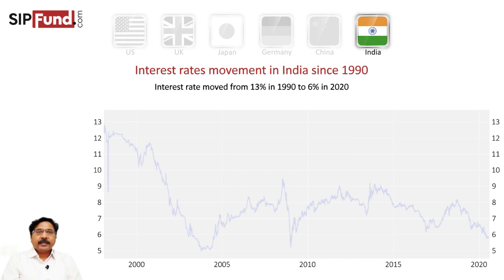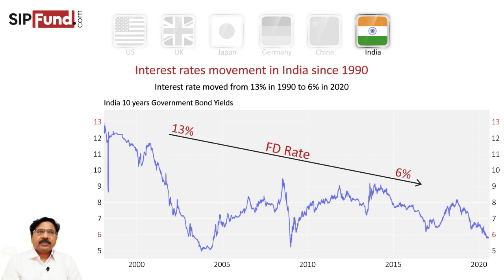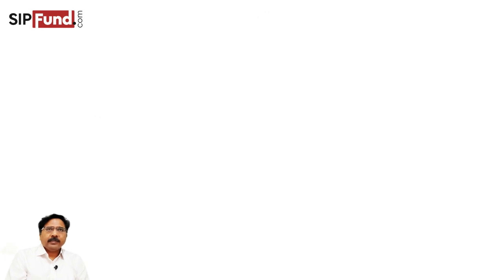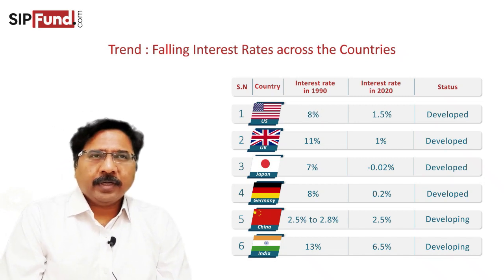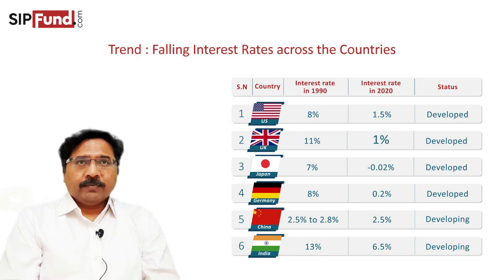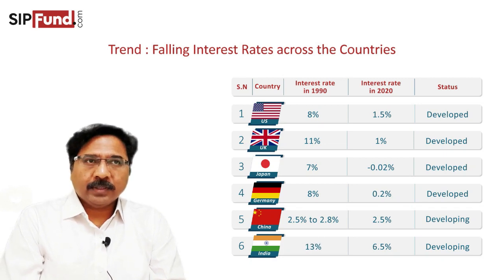The most important thing for us is the interest rate movements in India. These are 10-year government bond rates which have moved from 13% in 1990 to a current rate of close to 6%. These are GSEC rates — government security rates. How GSEC rates and FD rates relate: there's not much difference in terms of the trend. If the GSEC rate is currently around 6%, you are getting an FD of close to 6.5% or 7%. To summarize: USA has gone down from 8% to 1.5%, UK from 11% to 1.1%, Japan has gone sub-zero, Germany to 0.2%, and India from 13% to 6.5%.